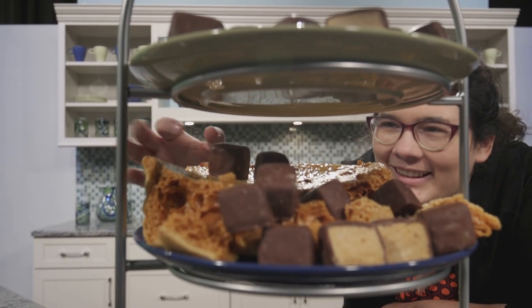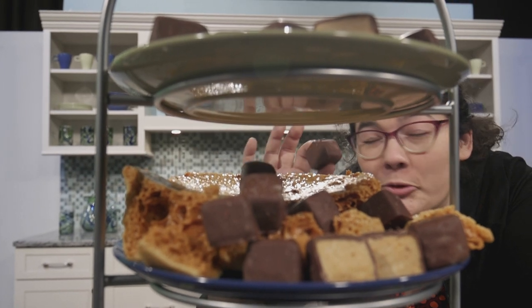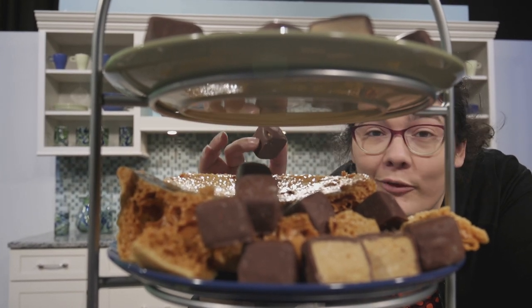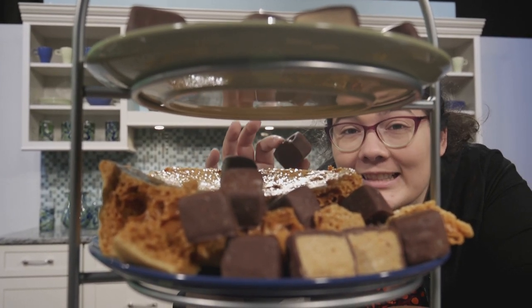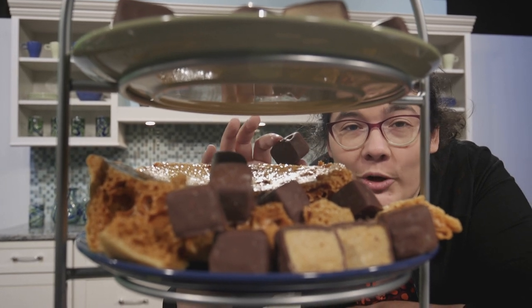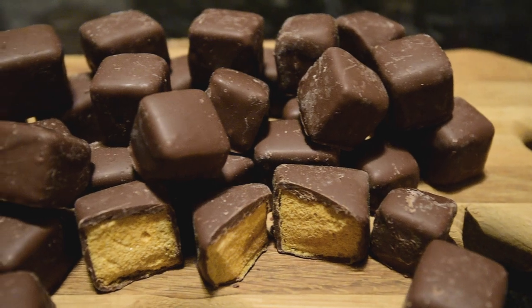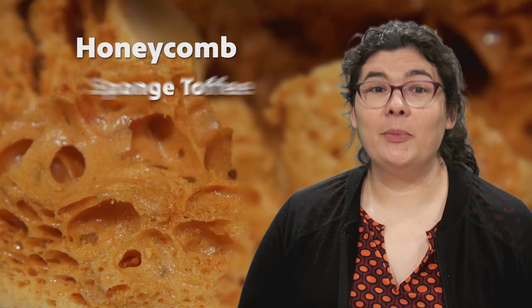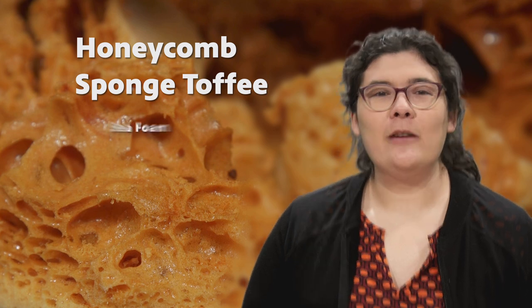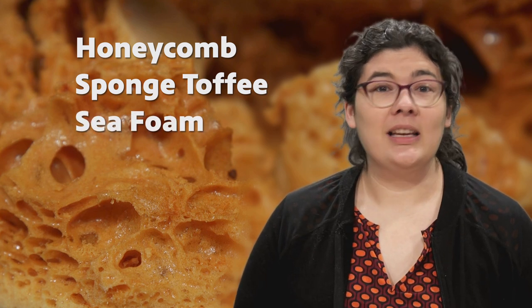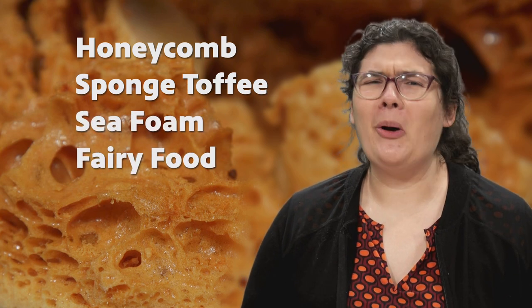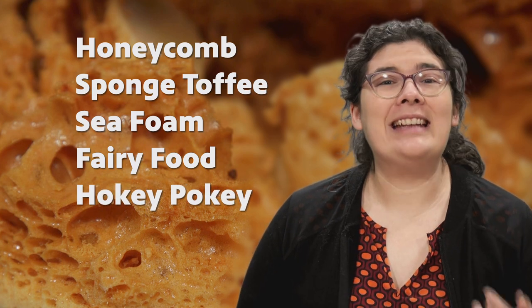Sponge candy, a delicate yet crunchy toffee confection covered in chocolate, is known around the world for its distinct texture. The variations come with and without chocolate: honeycomb from Australia, sponge toffee from Canada, sea foam from the Pacific Northwest, fairy food from Chicago, hokey pokey from New Zealand, and cinder toffee from the UK.